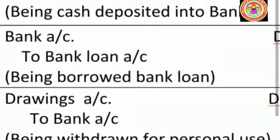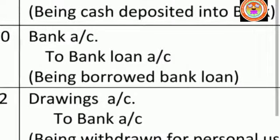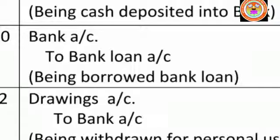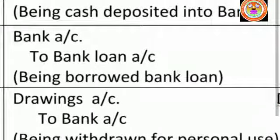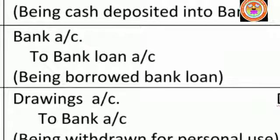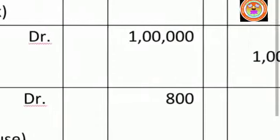At the time of borrowing, when we receive the money into our bank, it will be the gain. So that gain must be credited — write 'To bank loan account'. When we receive bank loan, it will be credited into our bank account only. So banker is the receiver, bank account is debited, and bank loan account is credited for ₹1 lakh.